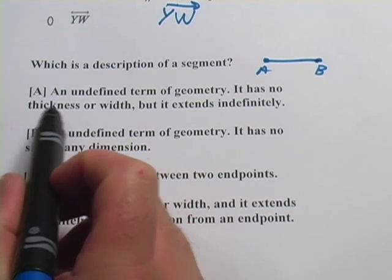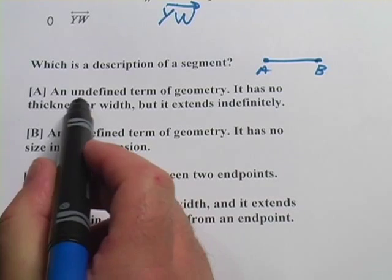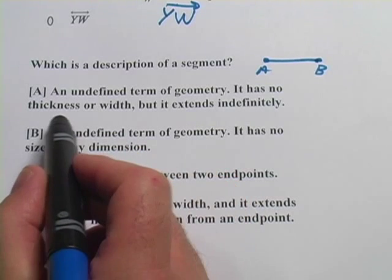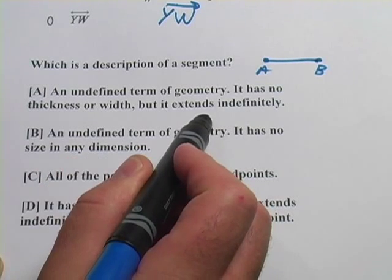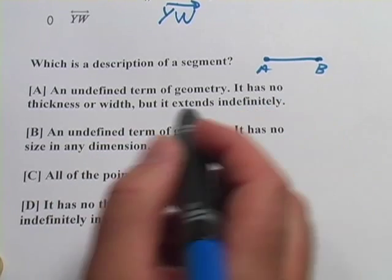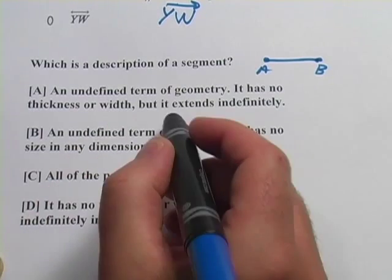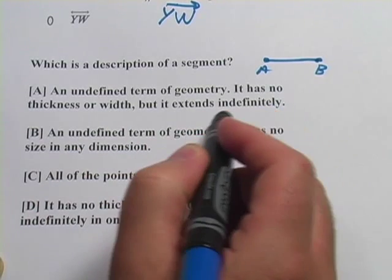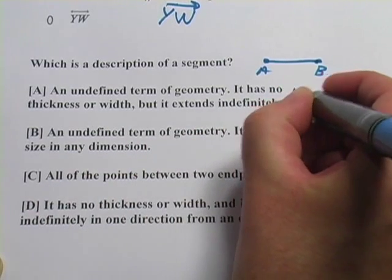They're giving us a couple of definitions here. A, an undefined term of geometry, it has no thickness or width, but it extends indefinitely. Well, that's not the right answer. A line segment, just like a line, has no thickness or width, but it doesn't extend indefinitely. Lines do that. So this is actually the definition of a line.